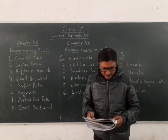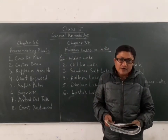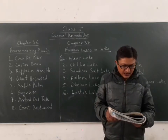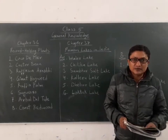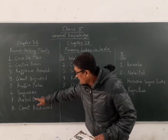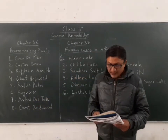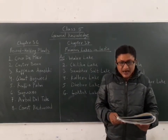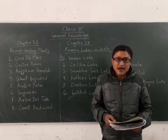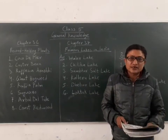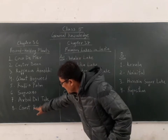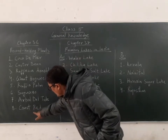Seventh: with a diameter of 11.42 meters, this tree in Mexico is the stoutest tree in the world.